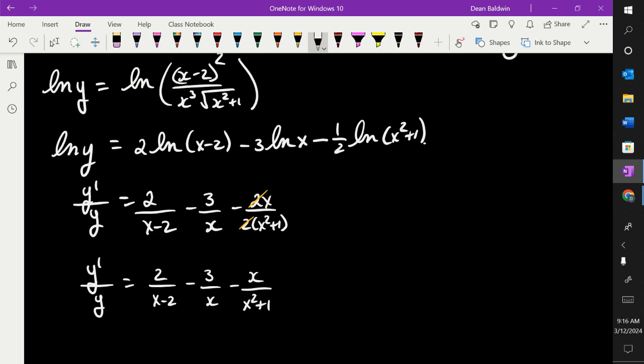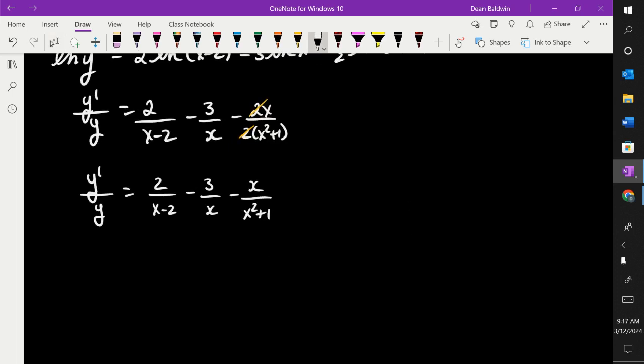But is that my answer? What am I trying to solve for? Y prime. I got y primed over y. So I got to multiply the y up. Don't multiply it in, just multiply it up. Now that's still not quite the answer.